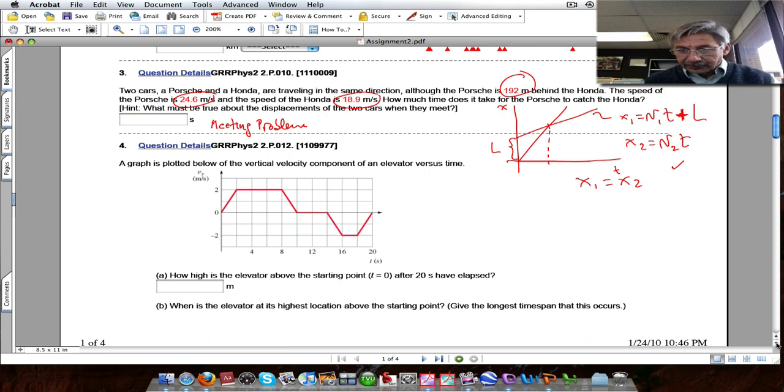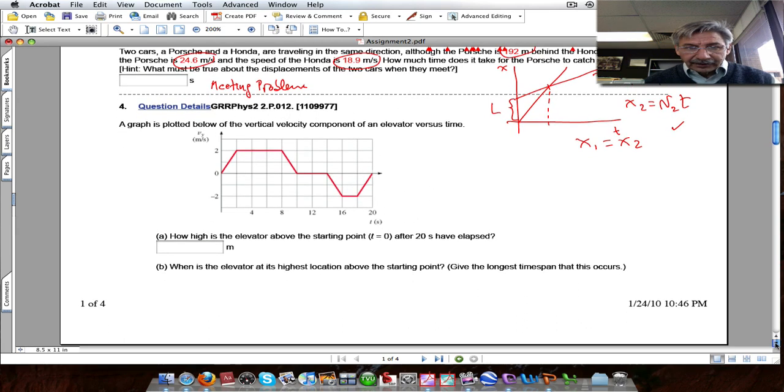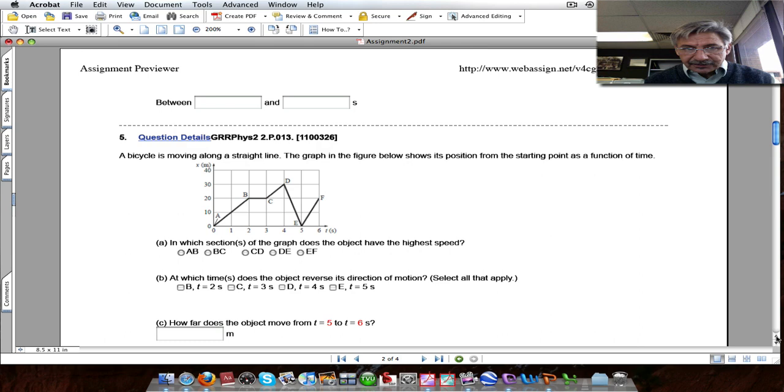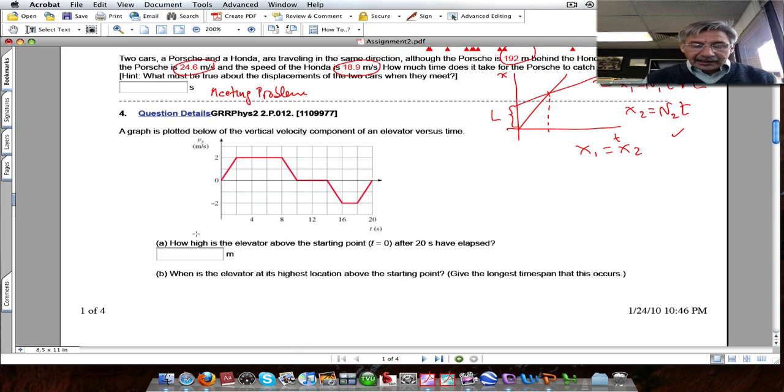The fourth problem is a graph of velocity versus time. There are several questions how high the elevator is. The displacement of the elevator is the area under the curve. This area here is negative. This area here is positive. So because this area is that, that, and a little bit of that, the area that they are asking is this one. That's one way to do it.